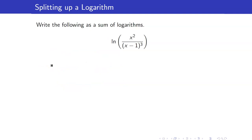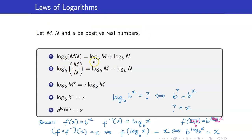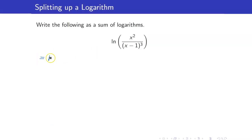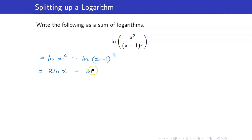Suppose we have ln of x squared all over (x minus 1) cubed. Take note that you have ln of a fraction — from the second property, the logarithm of a fraction is the logarithm of the numerator minus the logarithm of the denominator.